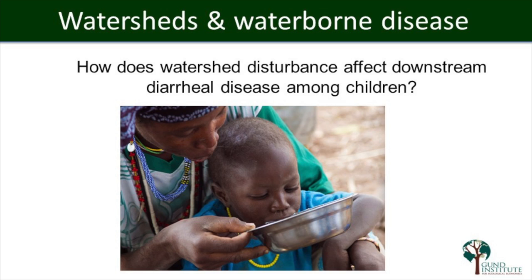The specific question we're addressing is linking watersheds and waterborne disease — specifically, how does watershed disturbance upstream affect downstream diarrheal disease among children? Diarrhea is the world's number one killer of kids; it kills more children every year than measles, malaria, and AIDS combined. It has really direct ties to the condition of watersheds upstream and therefore the water quality in those watersheds.